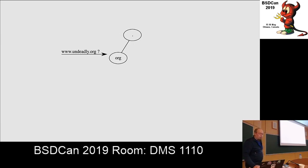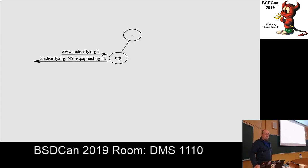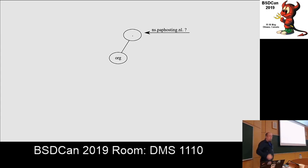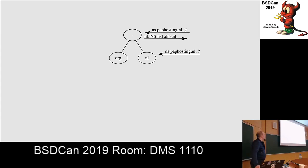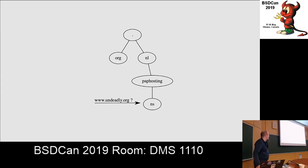So you ask .org 'www, have you heard of it?' They say 'yes, ask those people in the Netherlands.' And since they're in the Netherlands and their nameservers are also in .org, you need to go back to the root to get the IP. You ask the root about them, get the IP, go to the Netherlands, ask 'have you heard of www?' They say 'yes, they are here, go ask them.' You go back and ask them, and now you can read the OpenBSD website.